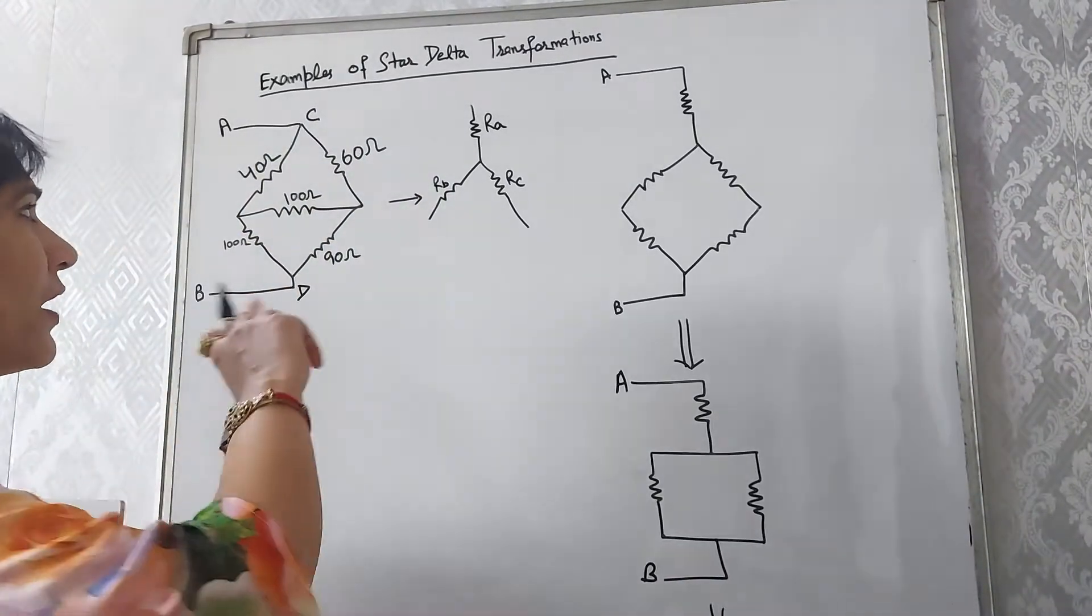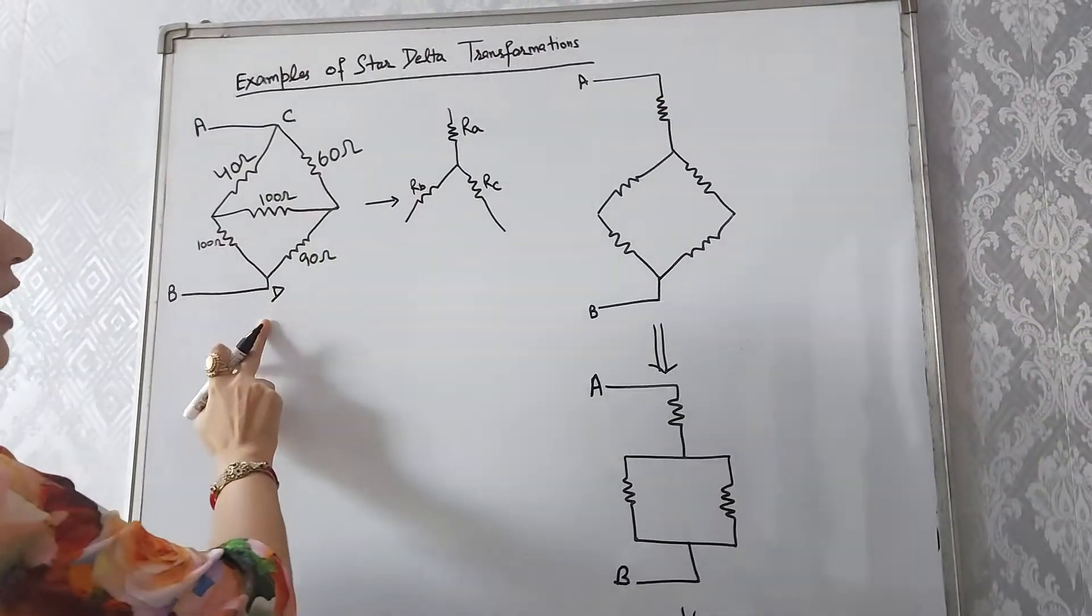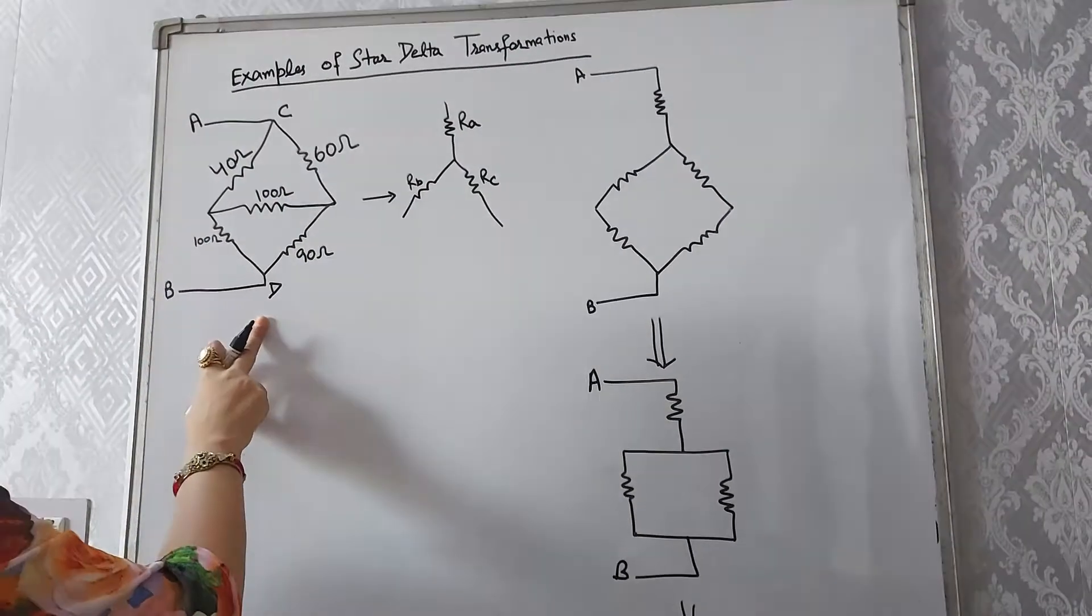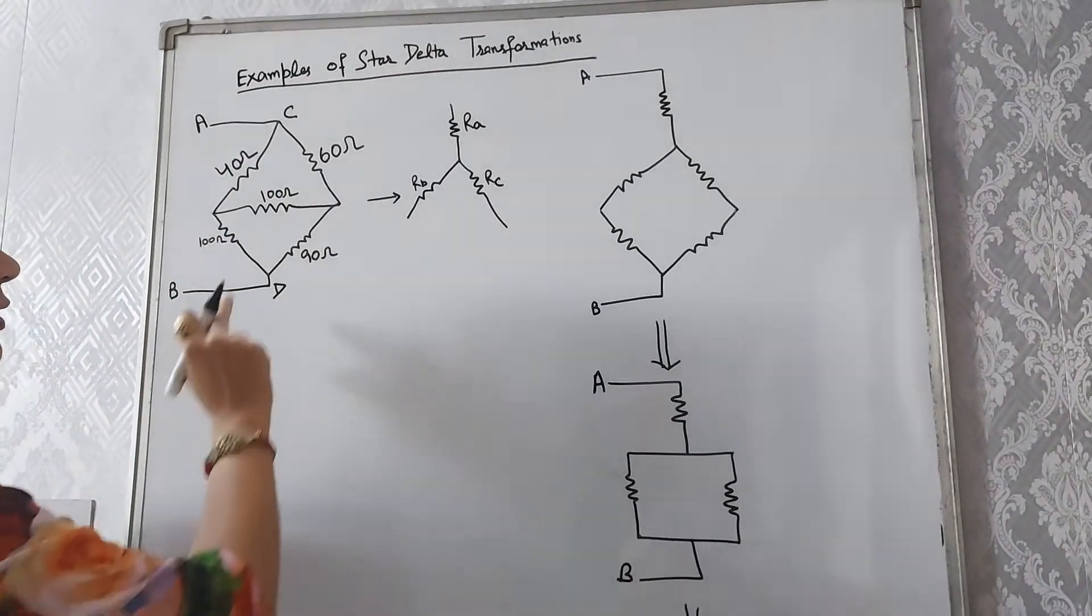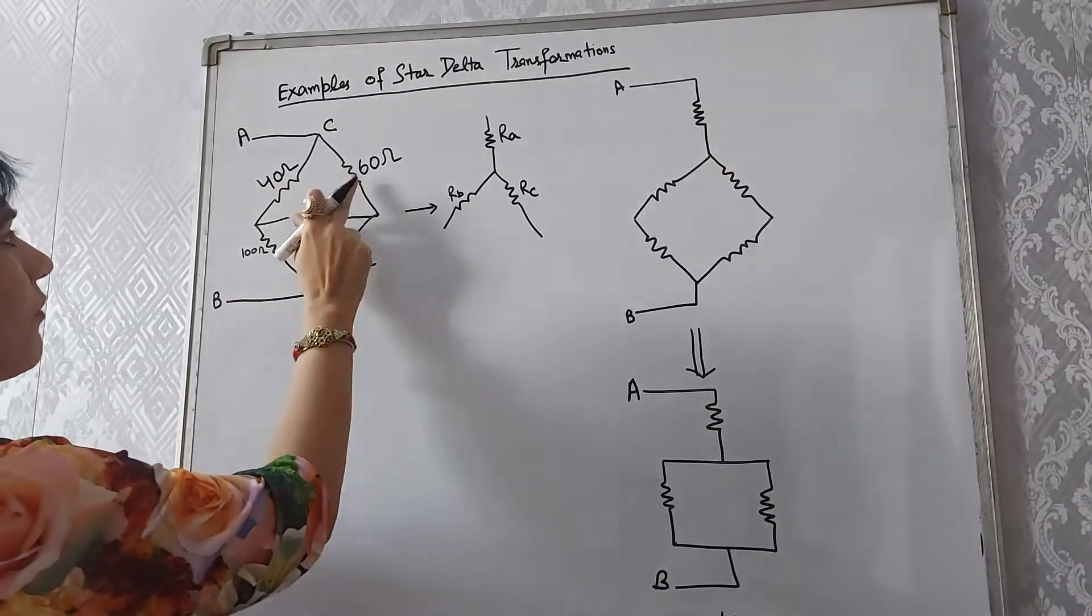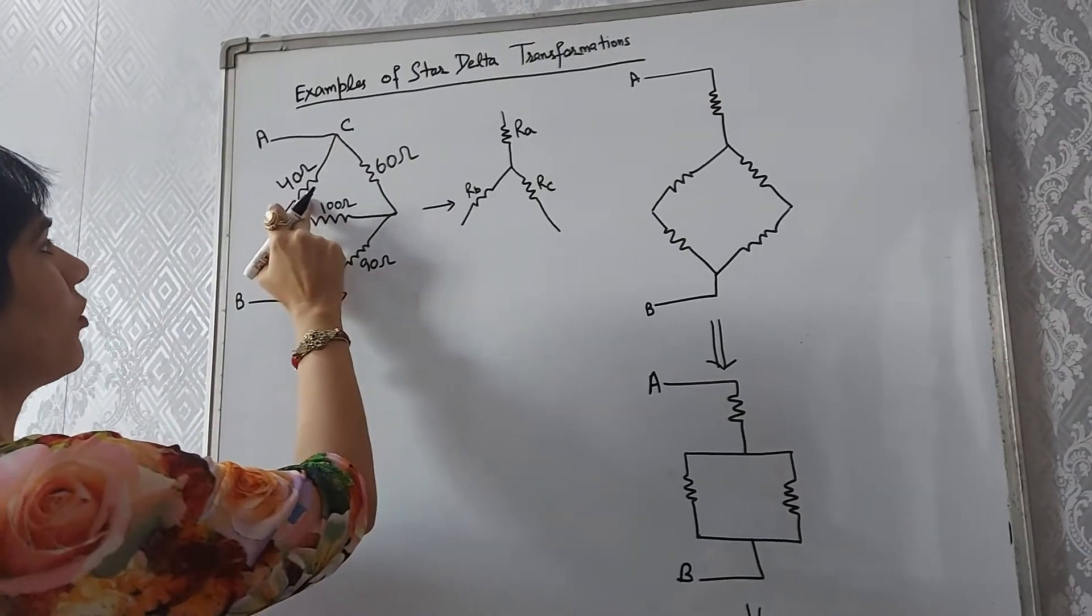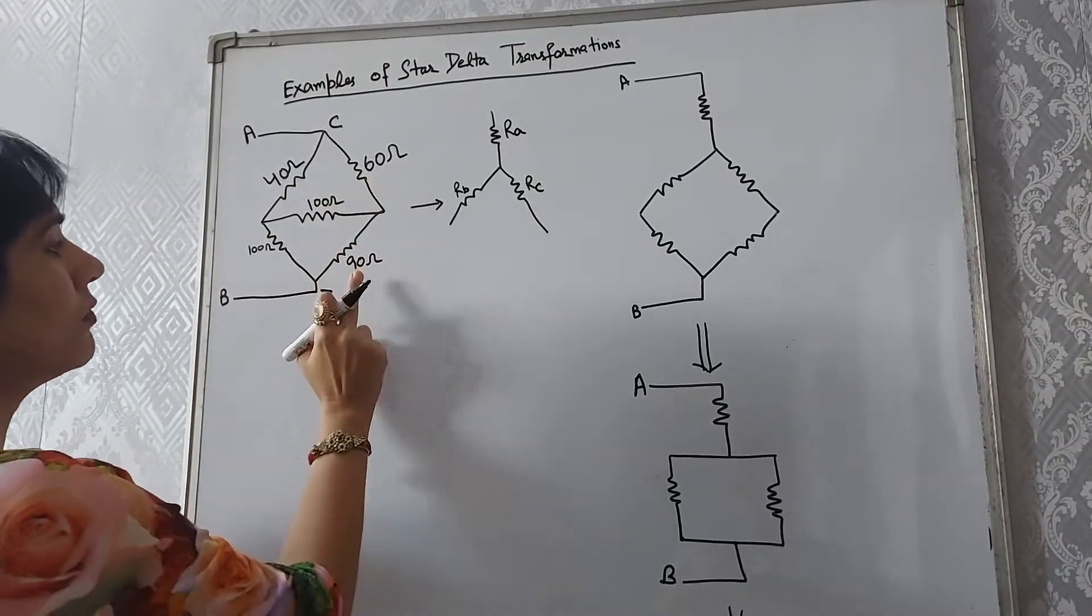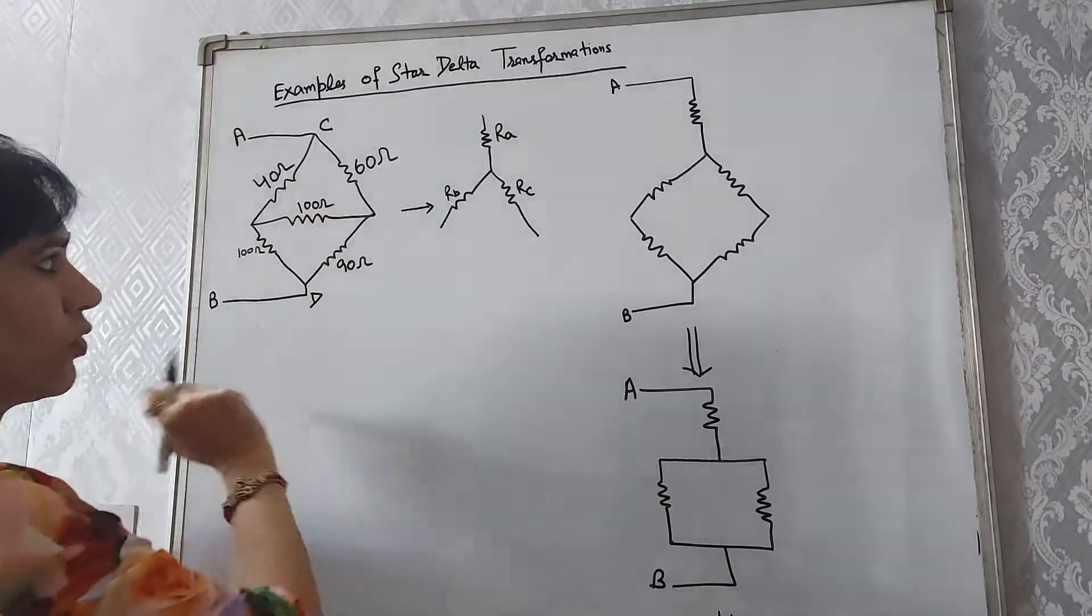Here we have an example. In this diagram we have to find the equivalent resistance of this circuit between A and B. We're having the circuit in bridge form in which we have 5 resistances: 40 ohm, 60 ohm, 90 ohm, 100 ohm, and the center one is 100 ohm.